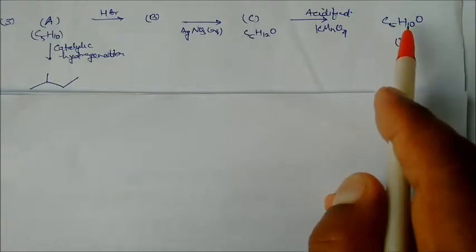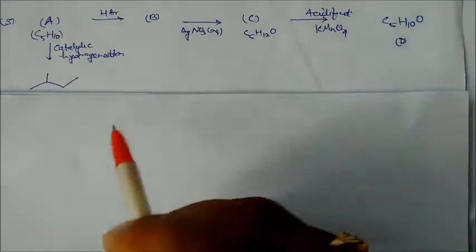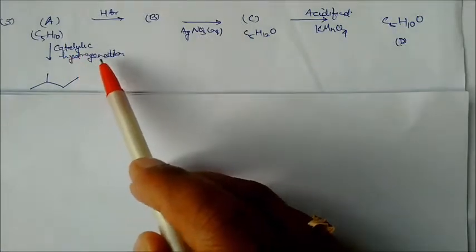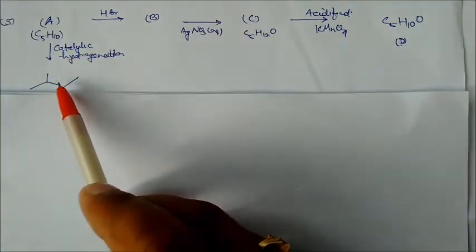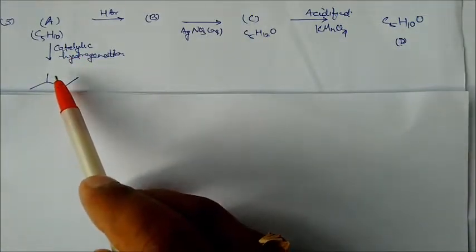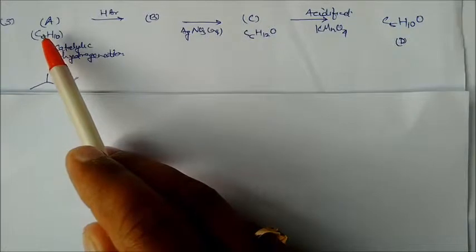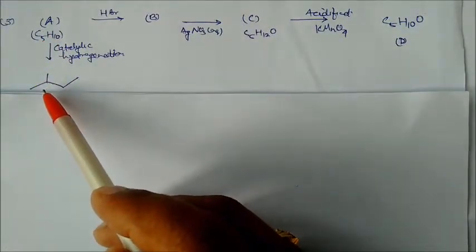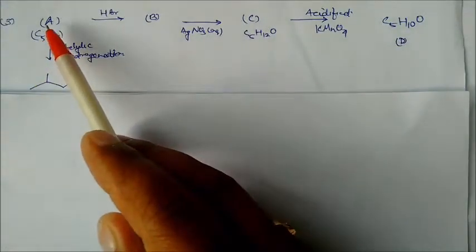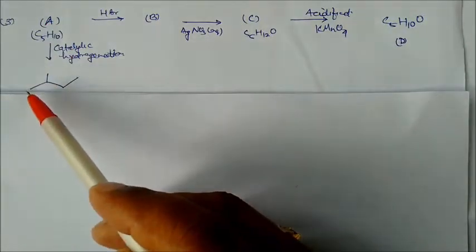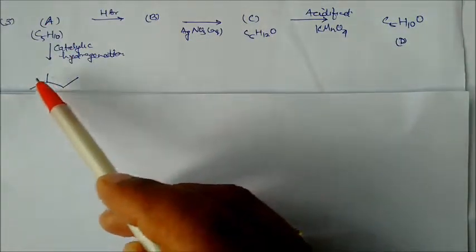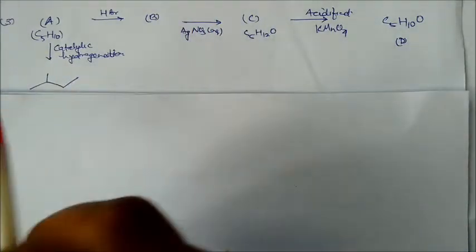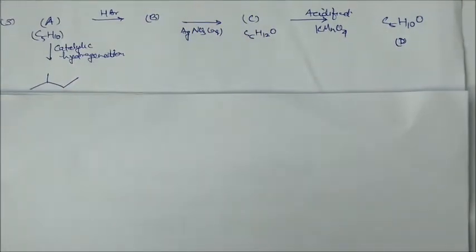This could be an alcohol or a cyclic compound, but on catalytic hydrogenation we get an alkane, so this must be an alkene converting to an alkane. From here we can guess the structure of A — the double bond position determines which direction the reaction proceeds.